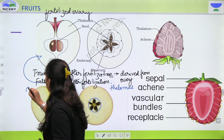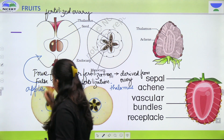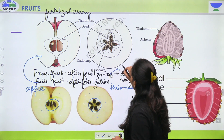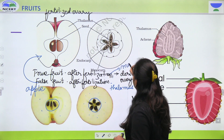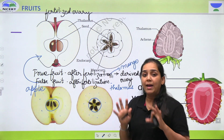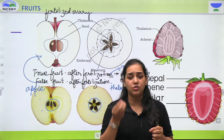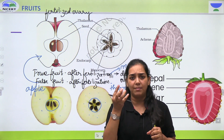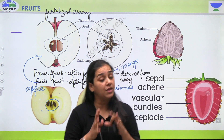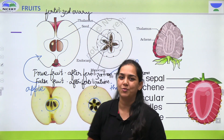Apple is the example for false fruit. True fruit ke liye aap example le sakte ho mango ka. Jo mango mein jo edible part hai, woh hai ovary se derived. Jo fleshy part hota hai mango ka woh hai ovary se derived. Toh usse aap bologe true fruit na ki false fruit.